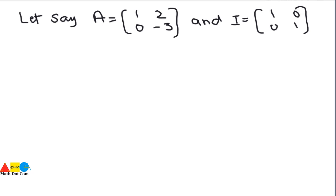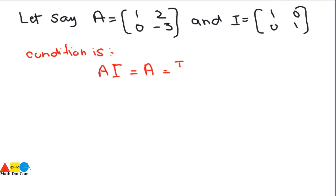For the multiplicative identity of a matrix, there exists a condition that must be satisfied. The condition is: A × I — where A is the given matrix and I is the identity matrix — must be equal to A. Or if we multiply the identity matrix with A, we also get the same matrix. It means the identity matrix is not affecting the given matrix. So we have to prove this condition.